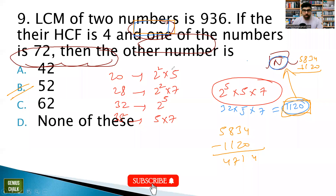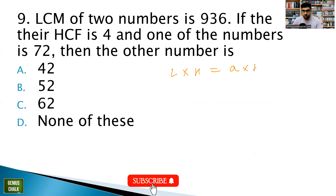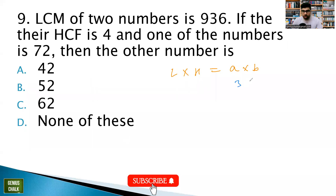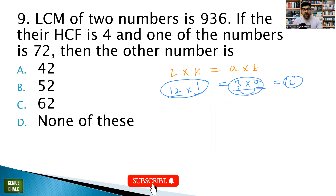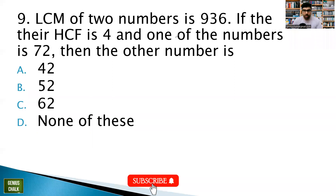Important property: LCM × HCF of two numbers always equals the product of those two numbers. Example: LCM=12, HCF=2, product=24; or numbers 3 and 4: product=12, HCF=1, LCM=12. Here: LCM=936, HCF=4, one number=72. Using the formula: 936×4 = 72 × other number, so other number = 3744/72 = 52.